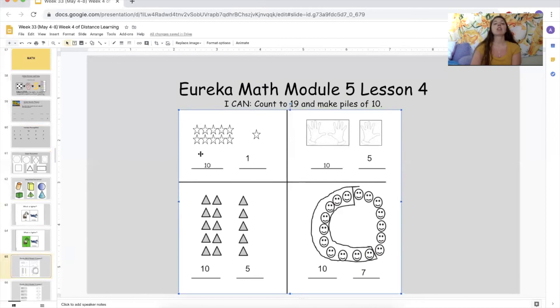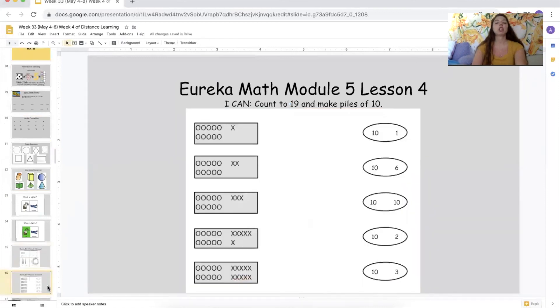All right. Let's go ahead and go through here and read them like they want us to. I have a group of 10 ones and one ones. I have a group of 10 ones and five ones. Now you try down here. I have a group of 10 ones and five ones. I have a group of 10 ones and seven ones. Very, very good.